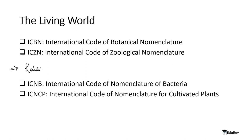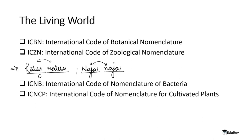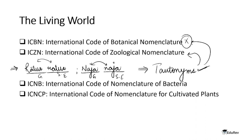Sometimes the genus and specific epithet are exactly the same — for example, Rattus rattus and Naja naja. These are known as tautonyms. It is very important to understand that tautonyms are allowed in zoological nomenclature but tautonyms are not allowed in botanical nomenclature.